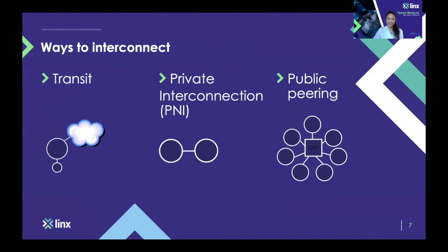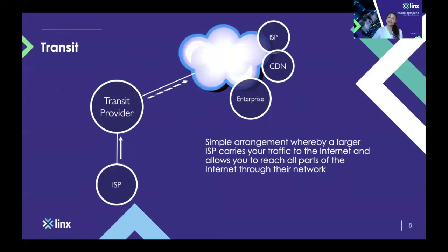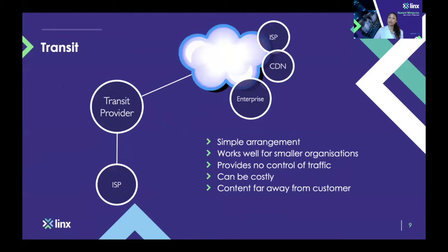Let's start with transit. Transit is a very simple arrangement where you ask a third party — a transit provider — to carry your traffic across their network to reach the rest of the Internet, and also for Internet traffic to go through their network to reach you. This is very common particularly among new networks joining the Internet. But it doesn't give you much control over how that traffic traverses the Internet, and it can also be a very costly way of interconnecting.